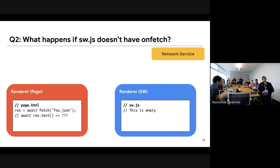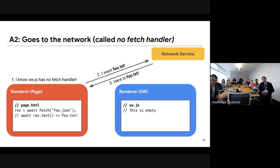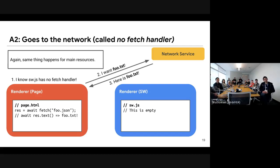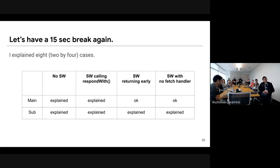The next question: what happens if sw.js doesn't have an onFetch handler? The answer is it also goes to the network — we call this 'no fetch handler'. In this case, the renderer knows there is no fetch handler, so the renderer for the page doesn't ask the renderer for the service worker; the request goes directly to the network service, which responds to the request. The same thing happens for the main resource.